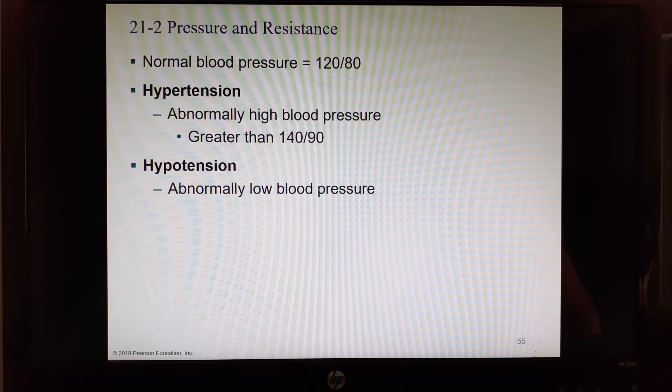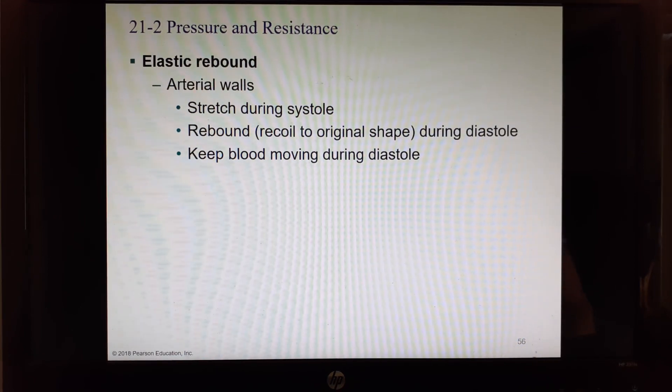Normal blood pressure is 120 over 80. Anything over that can go into areas of pre-hypertension, and then hypertension is diagnosed if it's higher than 140 over 90. Hypotension is having unusually low blood pressure, sometimes 100 over 70.